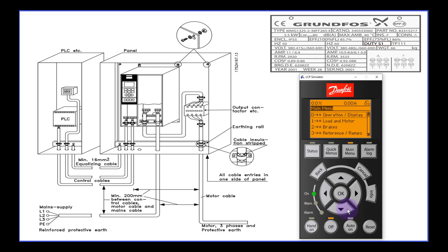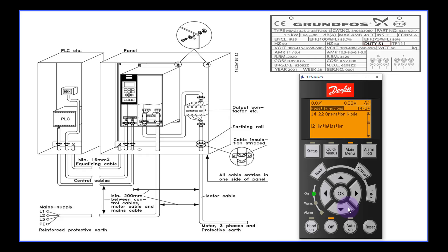Press the down arrow key until you see 'special function,' then press the OK button. Then press the down arrow key until you select 'operation mode,' then press OK to select this submenu. Then press the up or down arrow key until you see 'initialization,' then press OK. After that, turn off the power supply to the VFD and wait around 5 to 10 seconds. Then turn on the power supply and the settings inside the VFD will be reset to factory default.